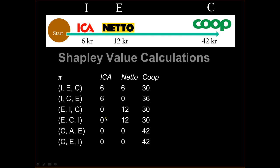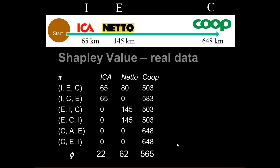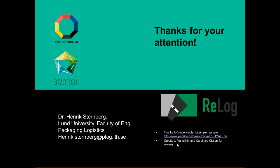What we do is take the average of all contributions over each permutation. In Ika's case the sum of their column is 12, and there are 6 different permutations, so 12 divided by 6 gives us 2. For Netto the Shapley value is 5, and for Coop it is 35. These meet the axioms for fair sharing. Using real data: Ika would pay for 22 kilometers, Netto for 62 kilometers, and Coop for 565 kilometers. This is fair sharing — thank you for your attention.